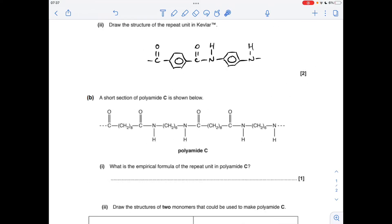Part B now. So we've got to give the empirical formula for the repeat unit of this polyamide. So we've got to identify the repeat unit first. So there it is there. So we'll just work out the molecular formula for that.